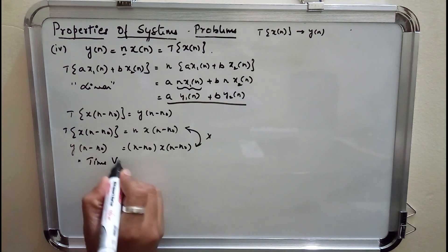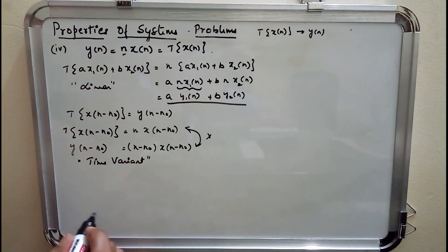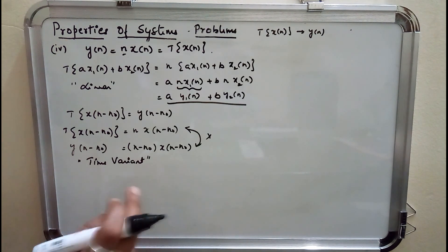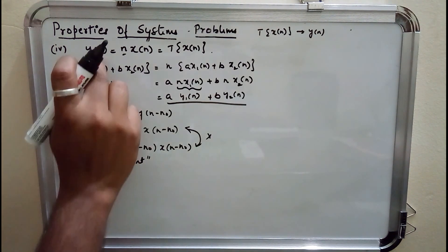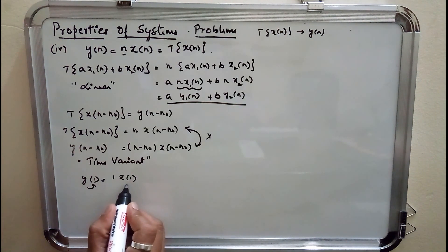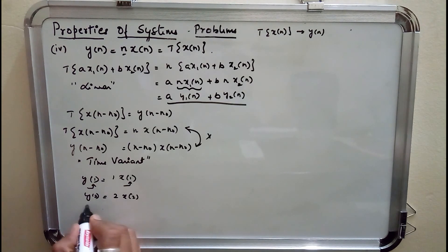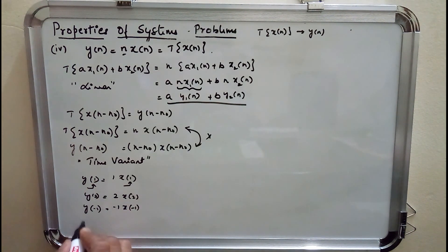Coming to the third property, causality: a system is said to be causal if output at one instant depends upon input at the same instant or the past instant. Taking y(1) = 1·x(1) — output at instant 1 depends upon input at the same instant 1. y(2) = 2·x(2) — output at instant 2 depends upon input at instant 2. For past values, y(−1) = −1·x(−1) — output depends upon input at the same instant, hence the system is causal.